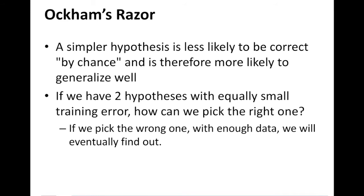So if we have two hypotheses with equally small training error, how can we pick the right one? If we pick the wrong one with enough data, we'll eventually find out. So if you are conflicted, if you have two hypotheses, you are unable to choose with more data, we'll likely know which one is inherently better for the data.